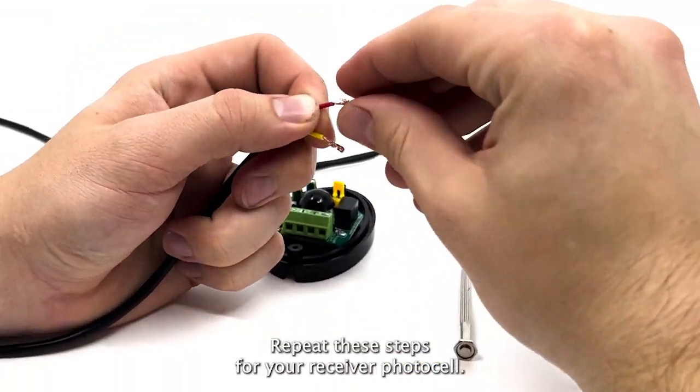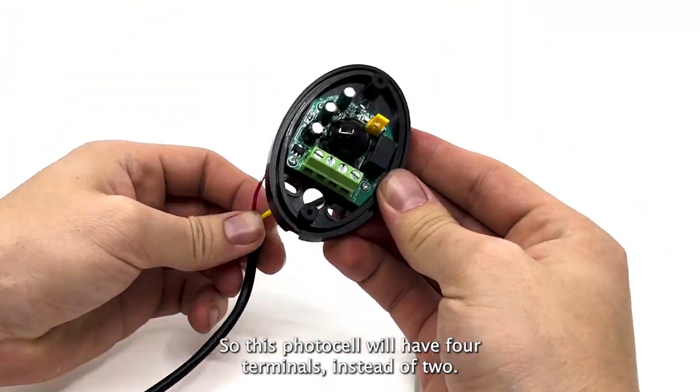Repeat these steps for your receiver photocell. This photocell will have four terminals instead of two.